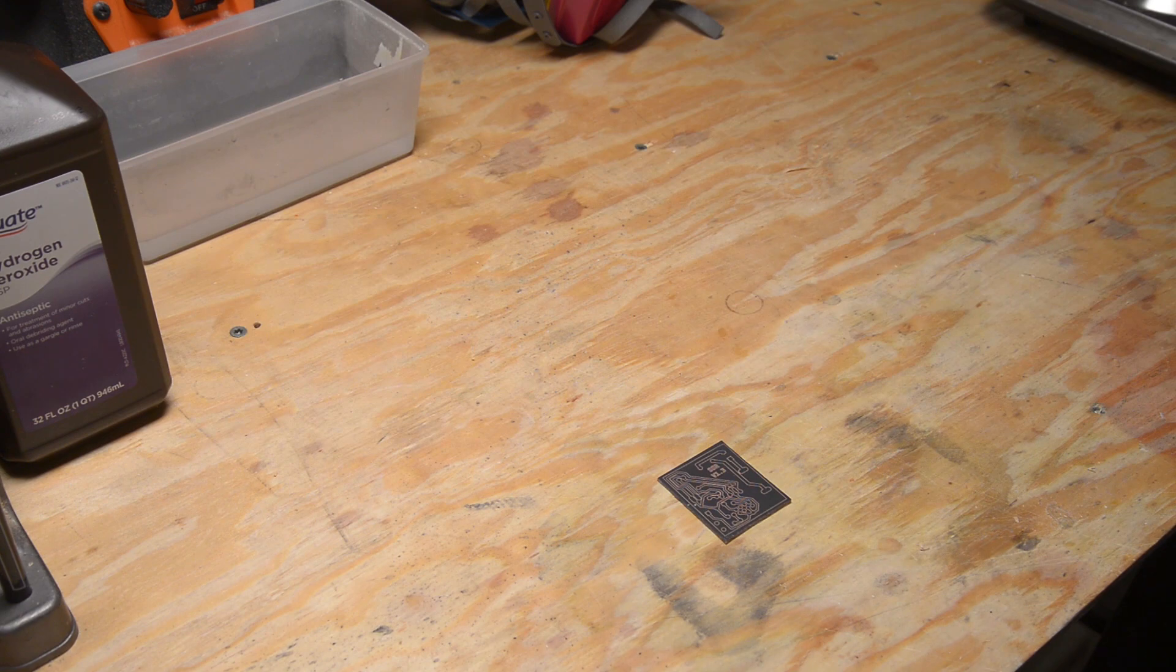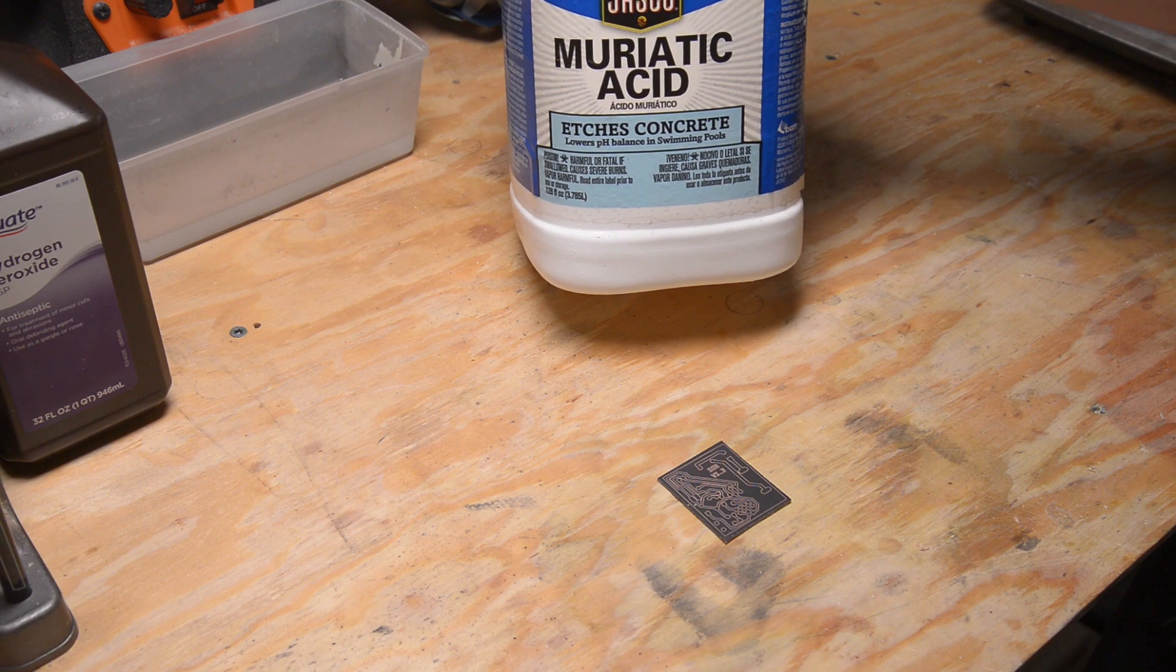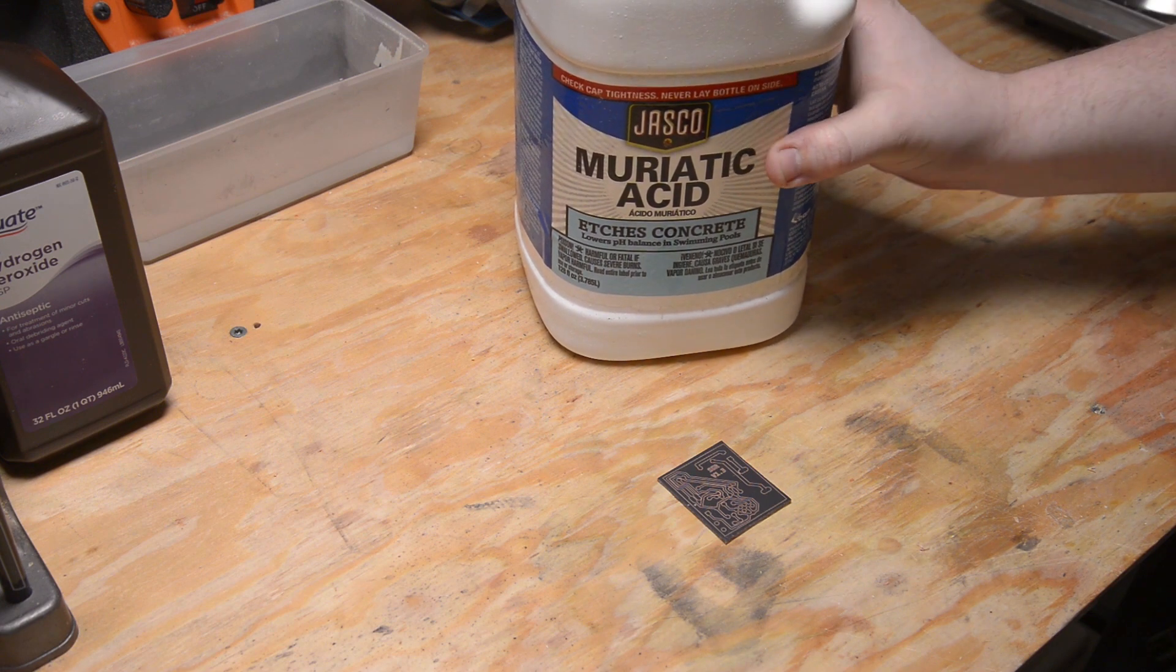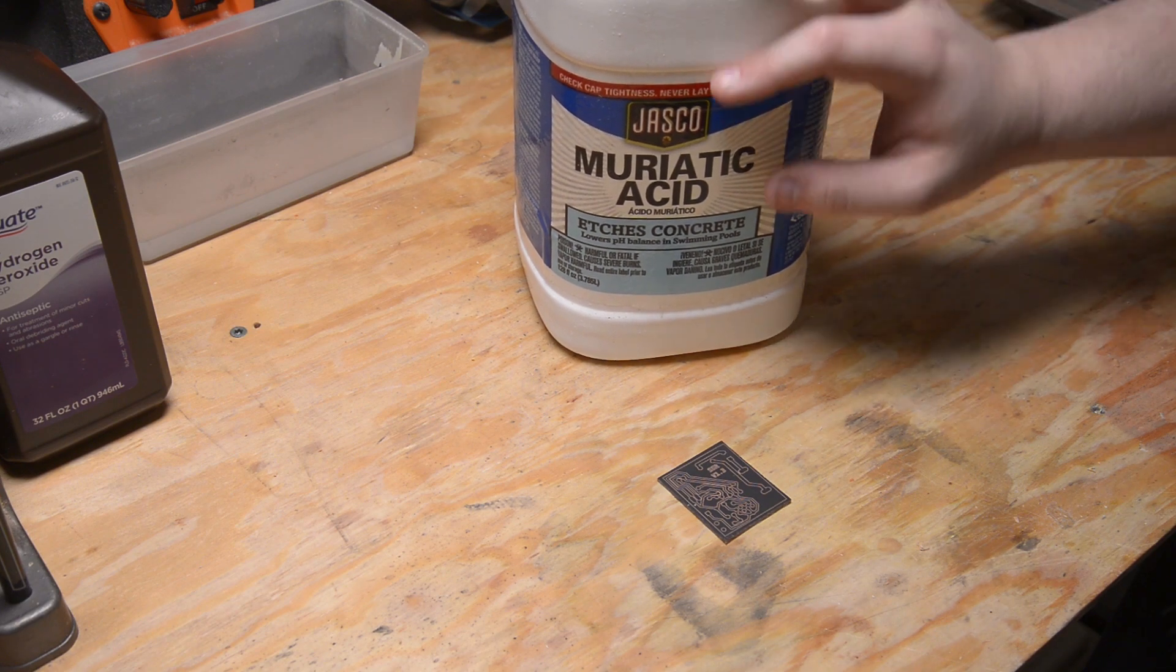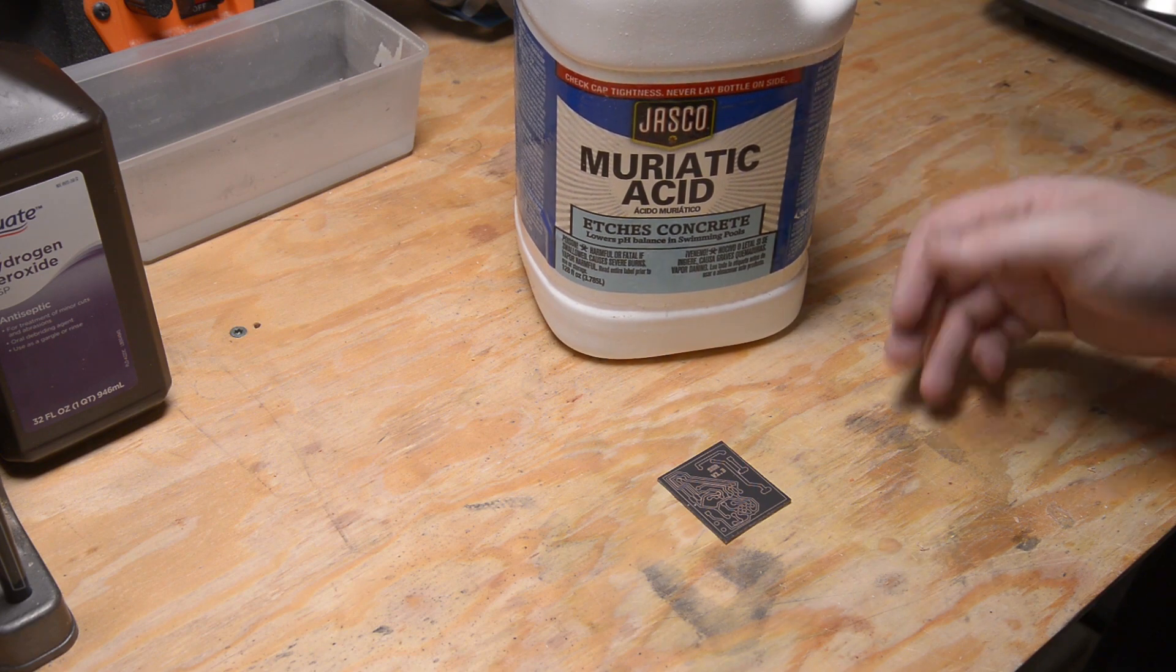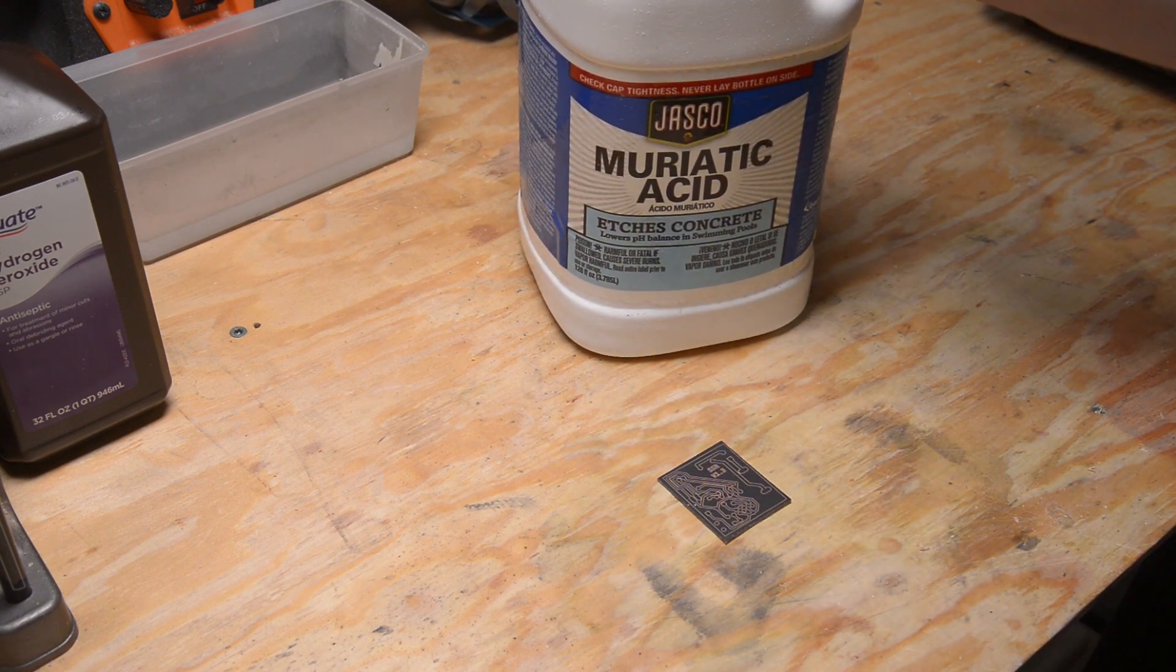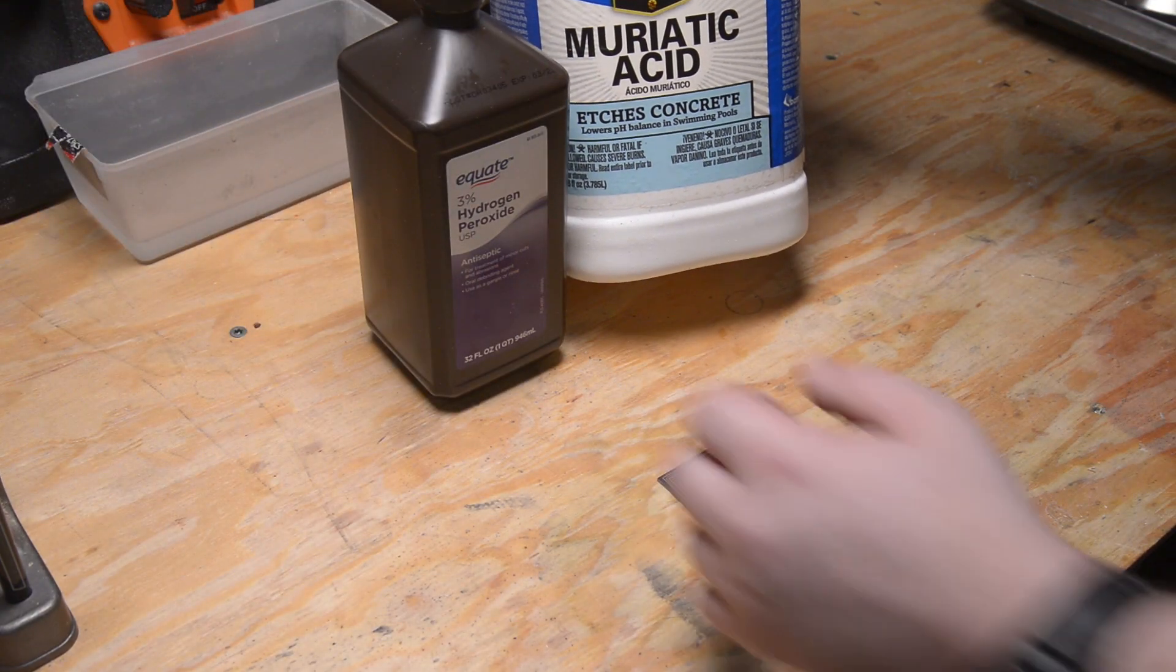The other thing, and this is the one that's a little bit harder to get, is muriatic acid. Muriatic acid I believe is used for cleaning concrete or dealing with pH in a swimming pool. You can pick this up probably not at your local drugstore but at a hardware store, Lowe's, Home Depot, whatever your hardware store is. Look at that - it etches concrete.